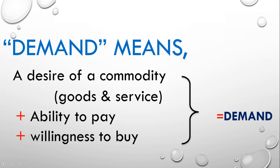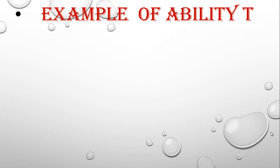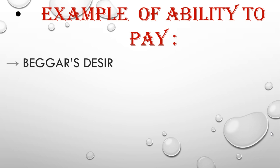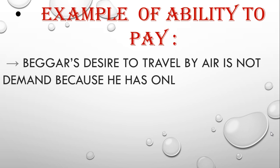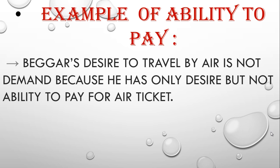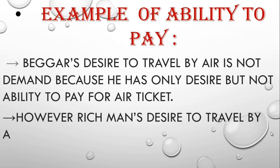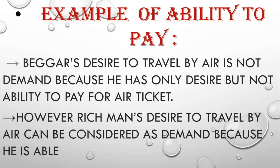Then and then it can be said that it is demand. Now going forward, what do you mean by examples of ability to pay? A beggar desires to travel by air - this is not demand because he has only desire but not ability to pay for the air ticket. So he does not have the ability to pay. Therefore, you should have an ability to pay. However, a rich man's desire to travel by air can be considered as demand because he is able to pay for that air ticket.